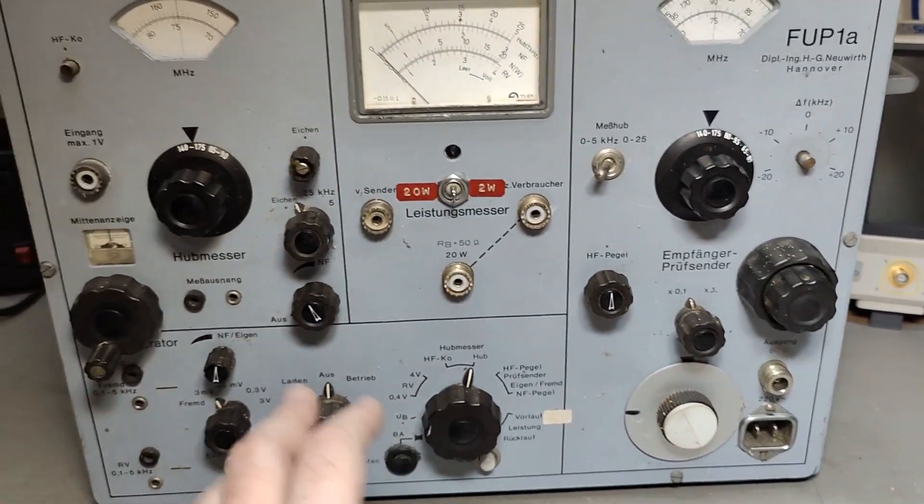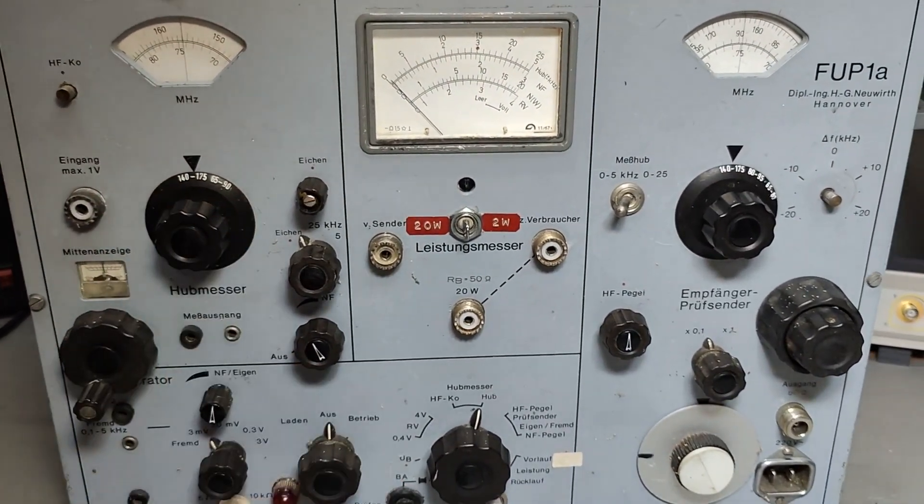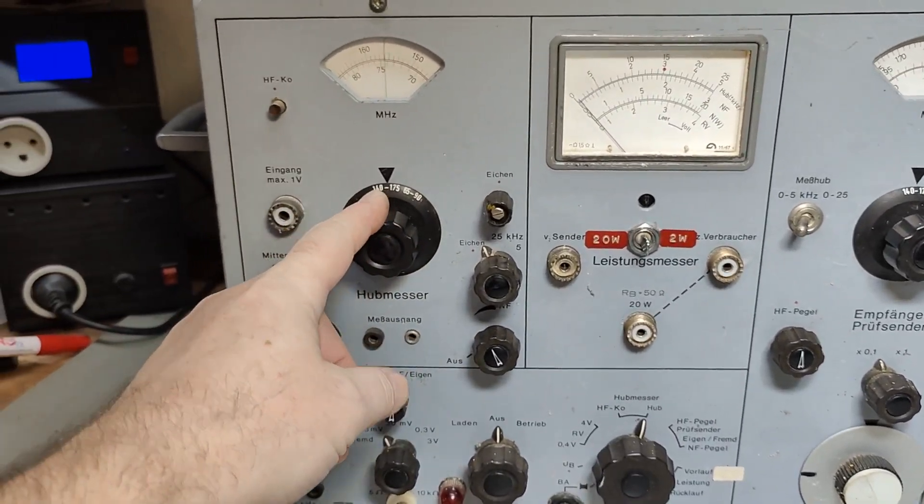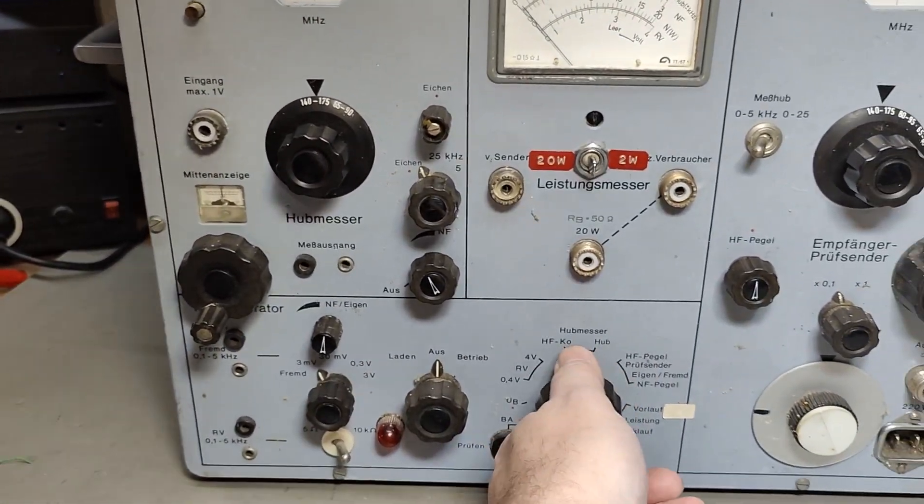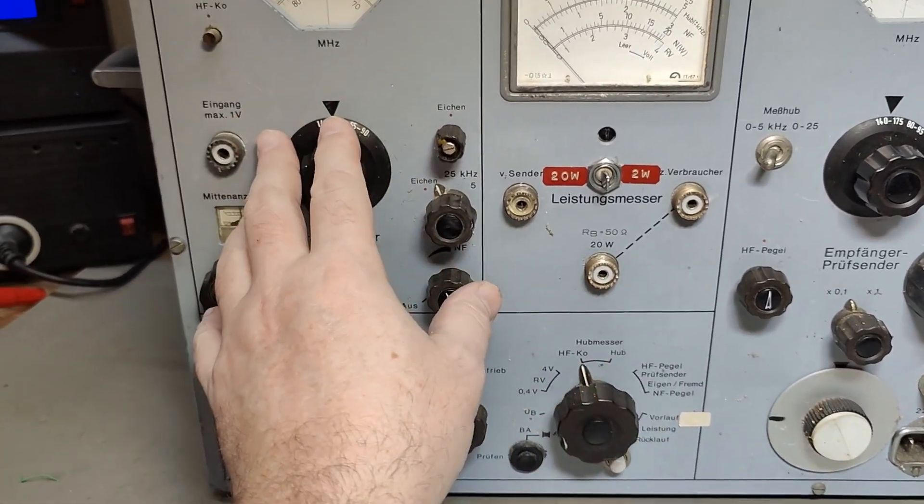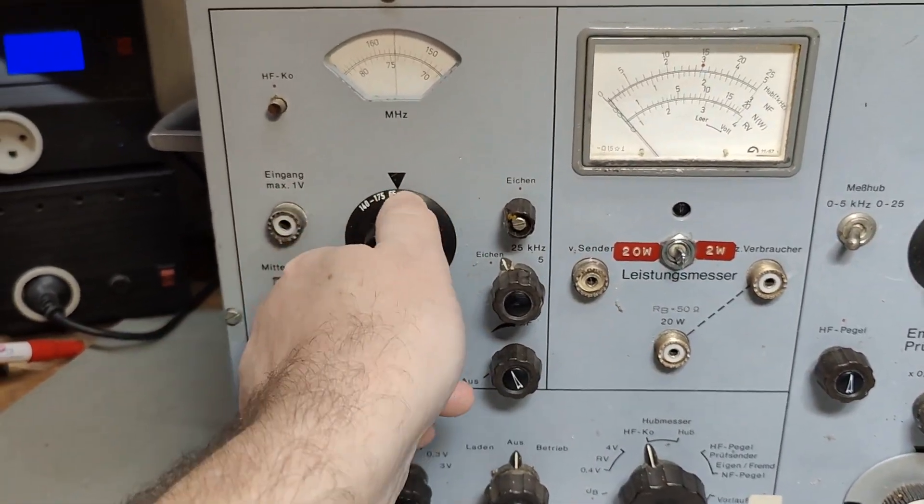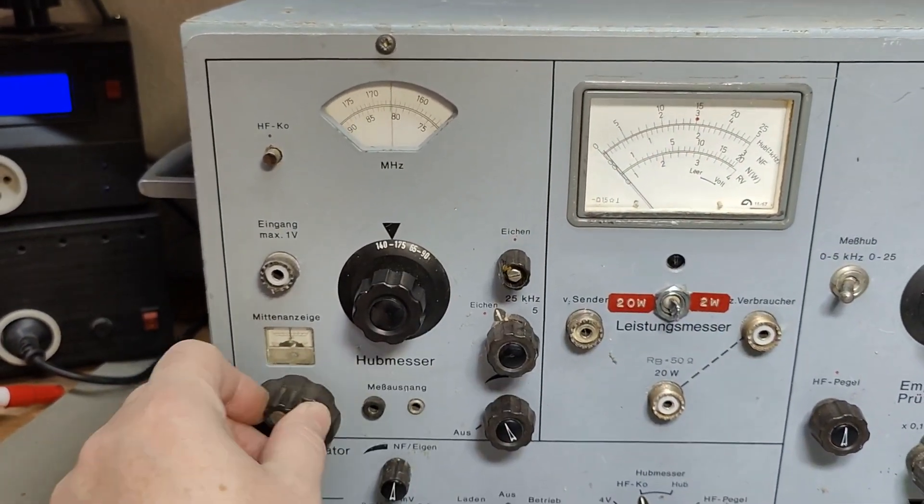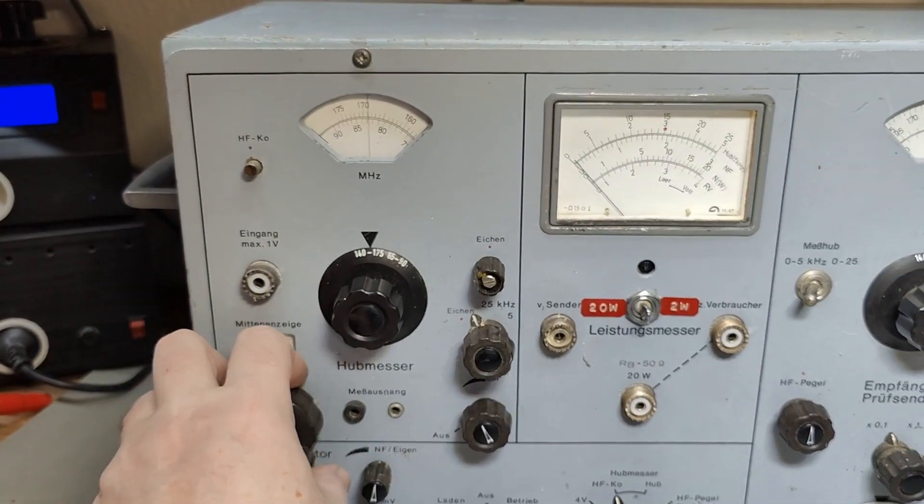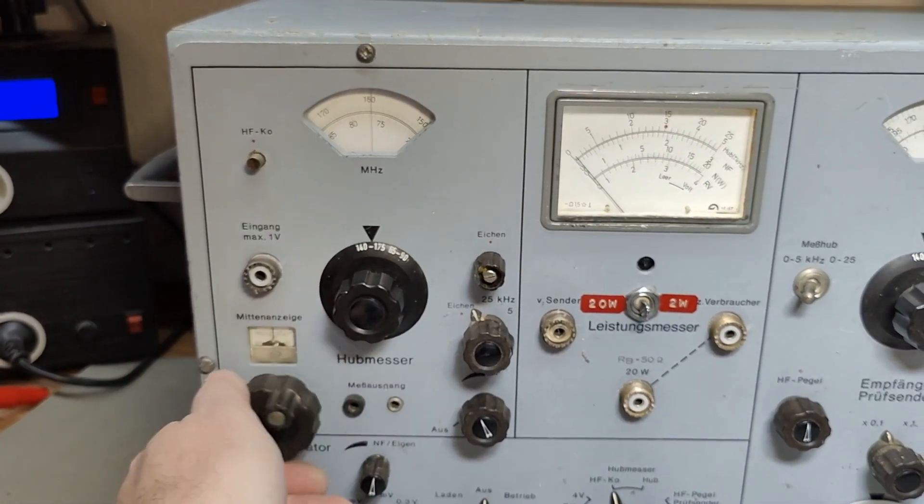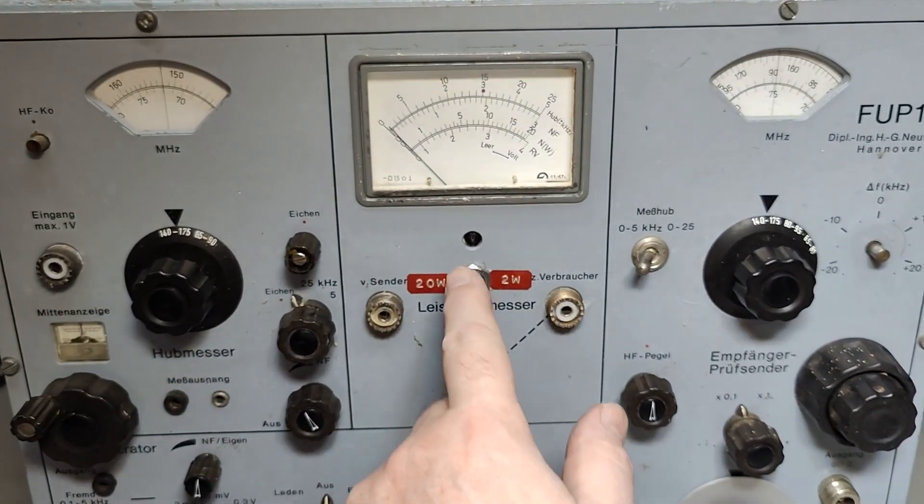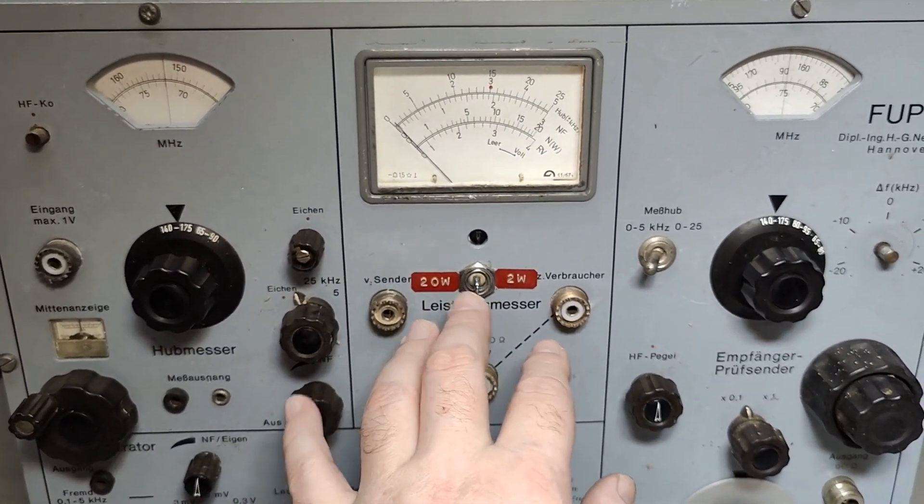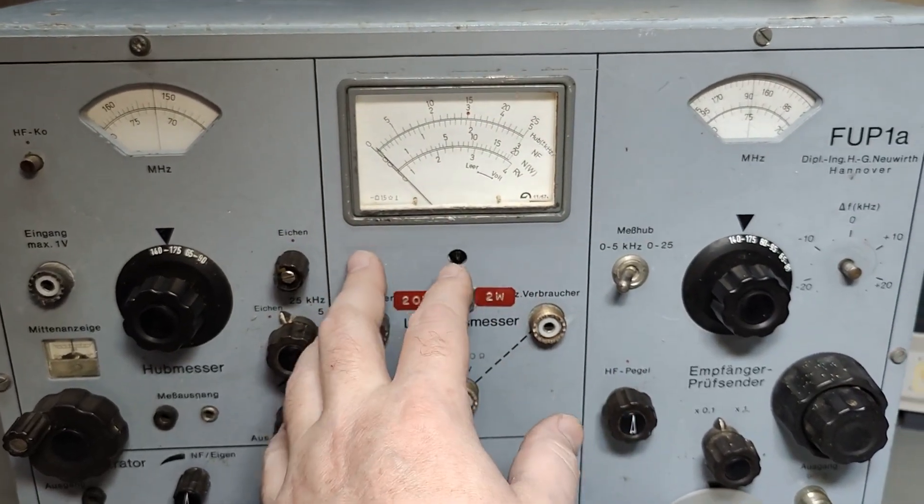And then you can also test your transmitter's frequency. And I think it works like this, where you put it into this mode up here for this. And then you dial the right frequency and you search for a peak. So it's quite simple, really. And then you have a dummy load, a two watt and 20 watt dummy load, where you can read out the transmitter's power.